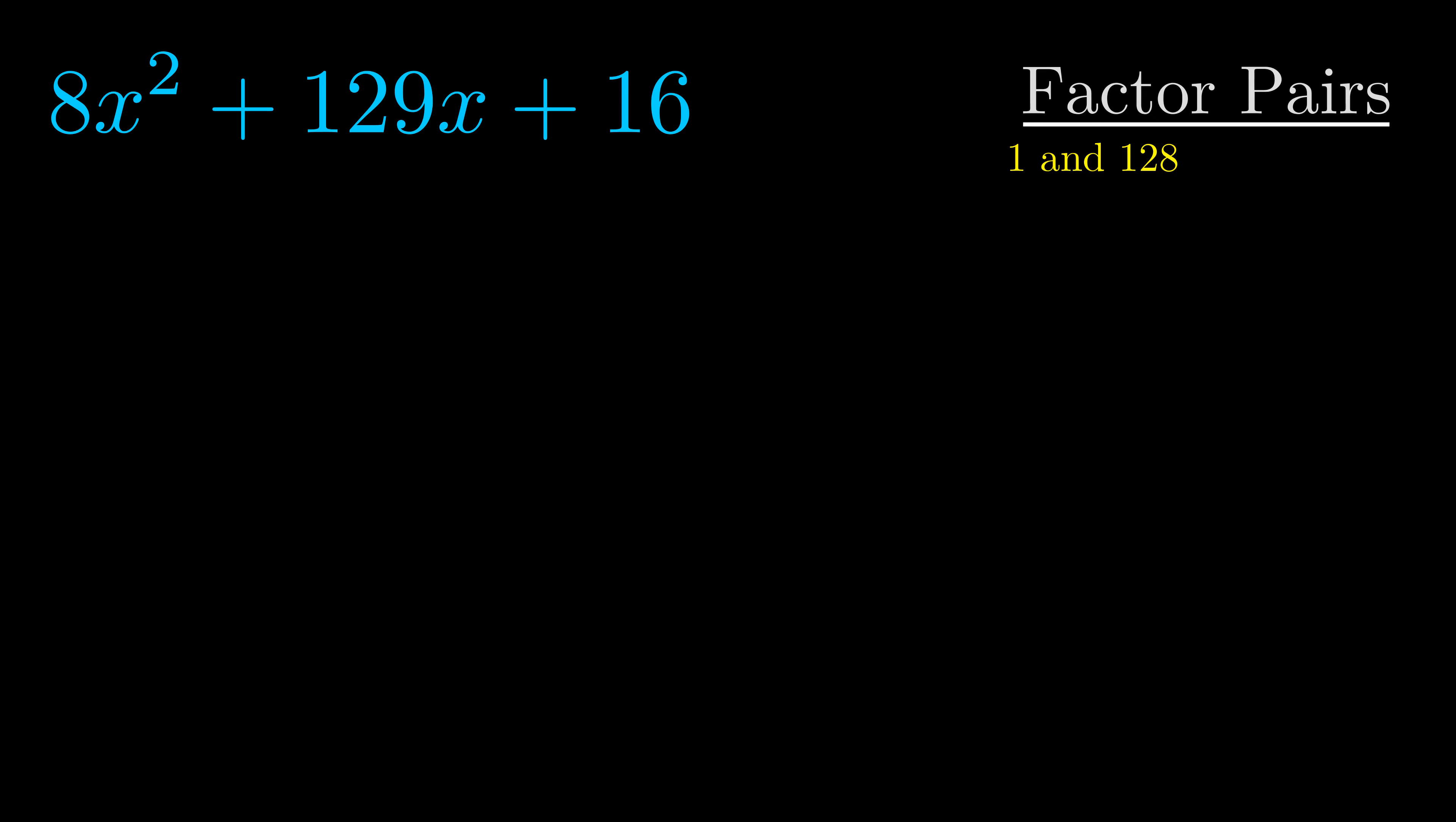Now once we have this factor pair, what we want to do is use it to split up the b value.